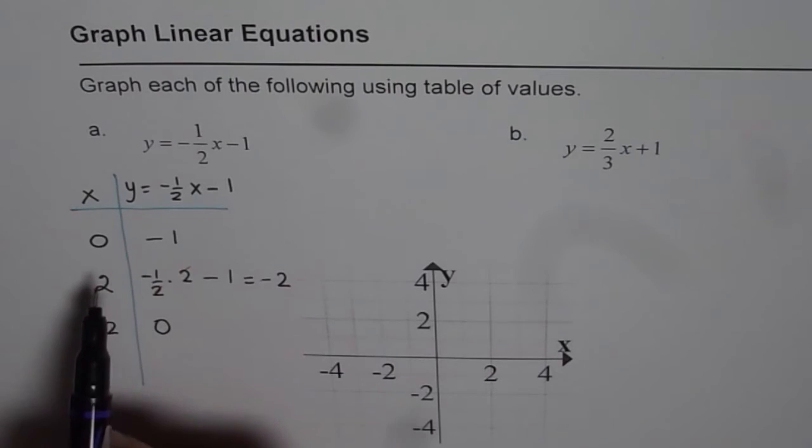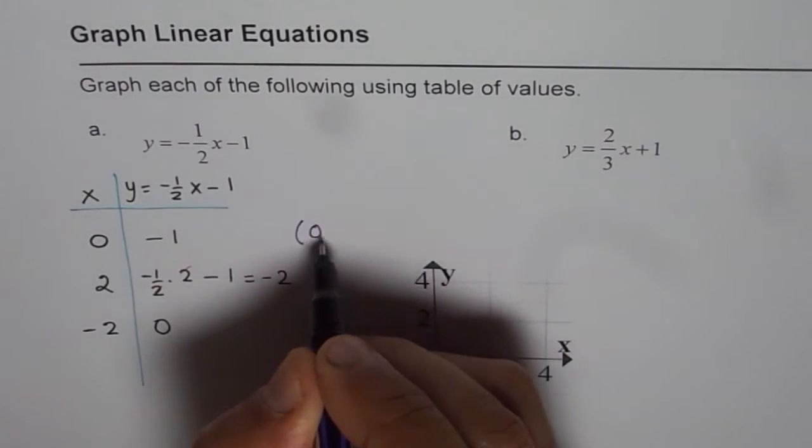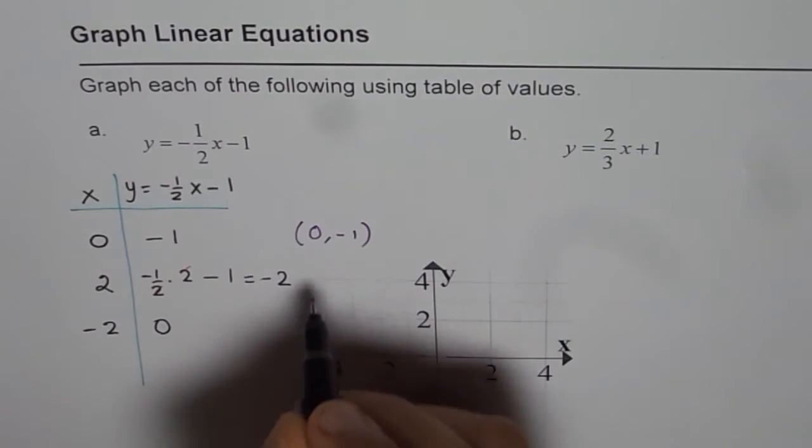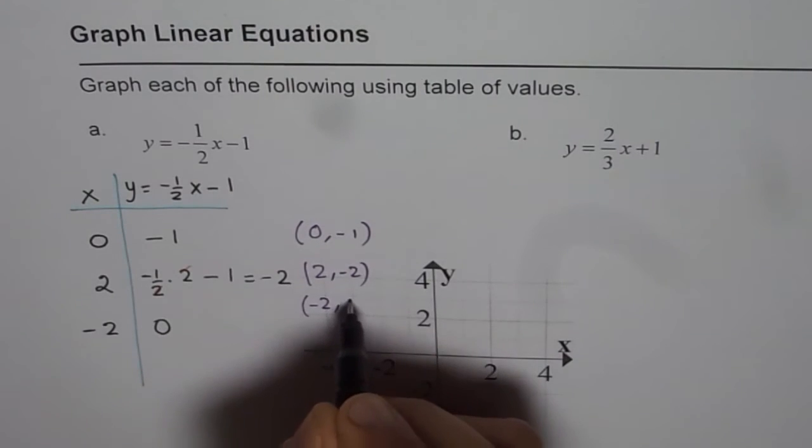So, we get the coordinate points which are 0 minus 1. So, let me write them down here. 0 minus 1. And then we have 2 minus 2 and minus 2, 0.